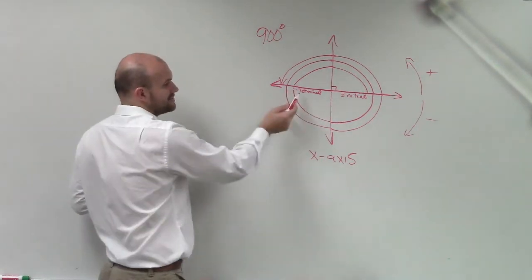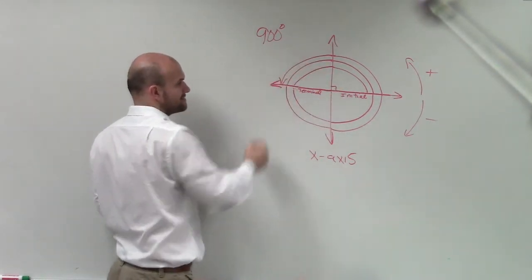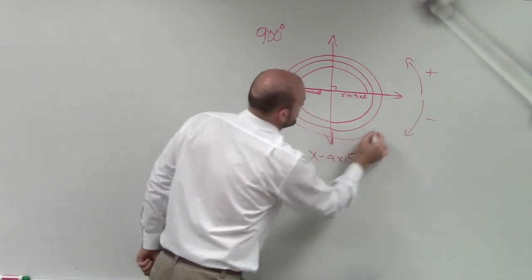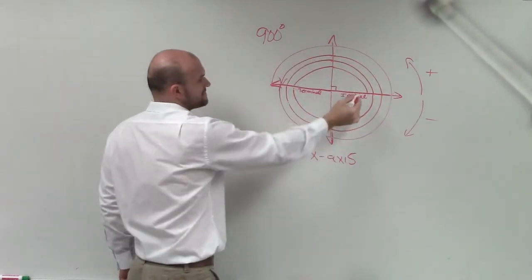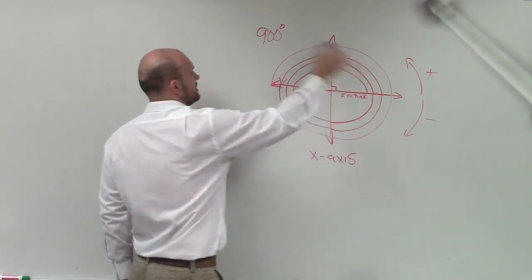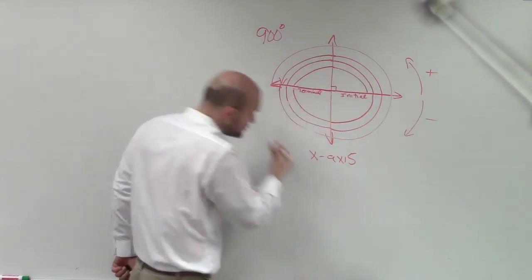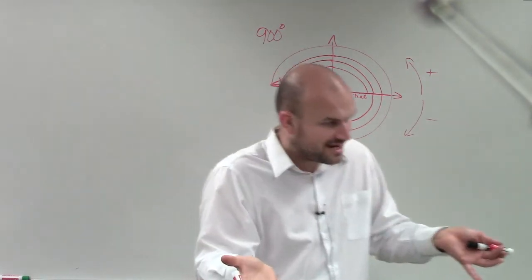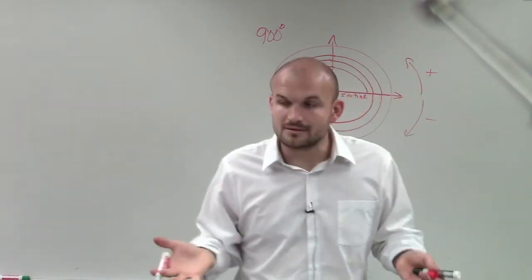So we have an initial and a terminal, because this graph went all the way around. Well, guys, can I keep on going around, and would my graph still start here and end there? Could I do it one more time and have the exact same initial and terminal sides? Does that make sense? OK.